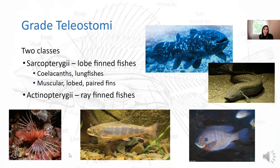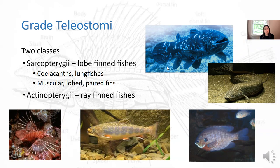Then the teleost fish. There are two classes: Sarcopterygii and Actinopterygii. We focus in class on Actinopterygii, but Sarcopterygii are important because they are prehistoric fish and the ancestors to early amphibians. Sarcopterygii are lobe-finned fish — extant examples include coelacanths and lungfish. They have muscular lobed paired fins, making them a link to the first land vertebrates. Actinopterygii are the ray-finned fishes, like those we're most used to seeing.